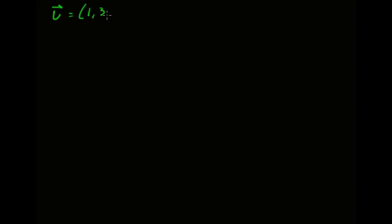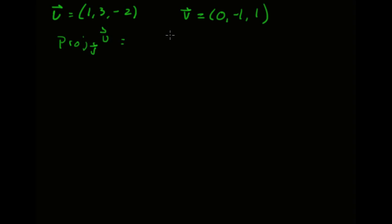Let's look at the orthogonal projection problems. For the first two problems we're using the vector u as (1, 3, -2) and the vector v as (0, -1, 1). We're trying to find the projection of u onto v, which is the inner product of u and v over the inner product of v and v, times the vector v. In problem 1 we're using the dot product as the inner product.